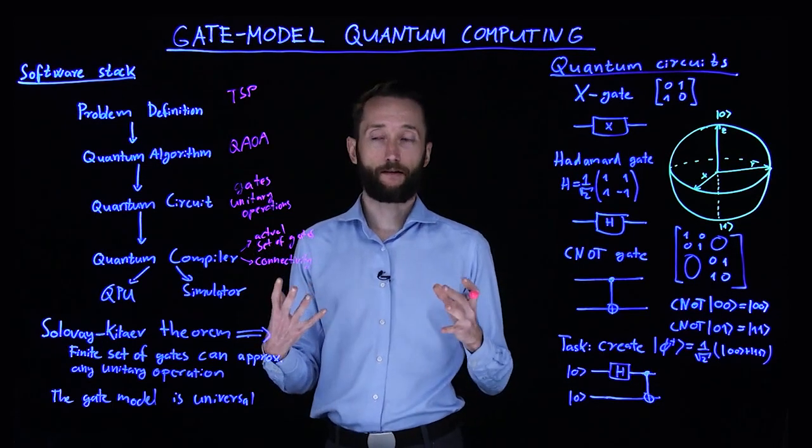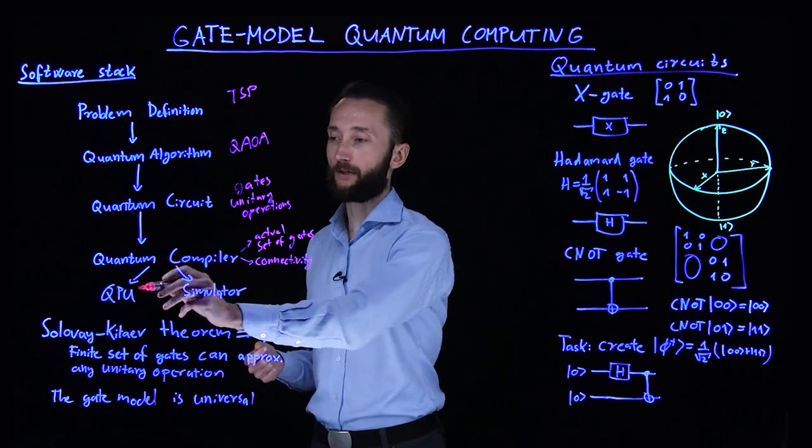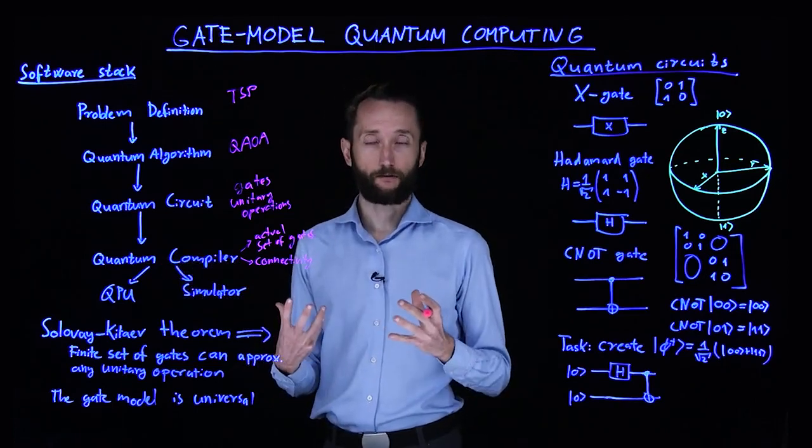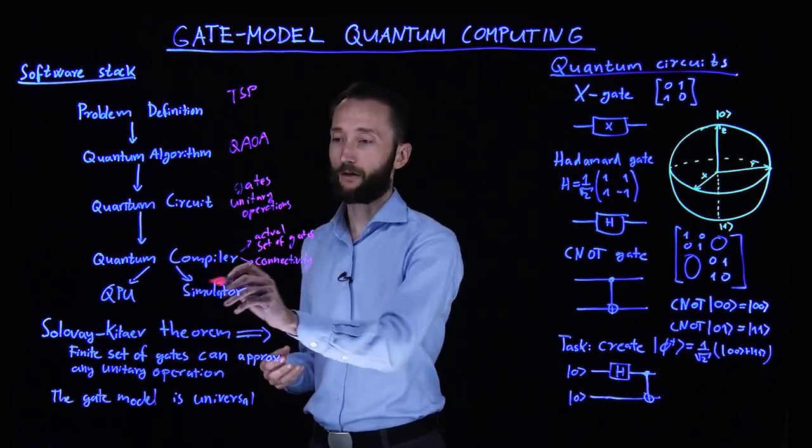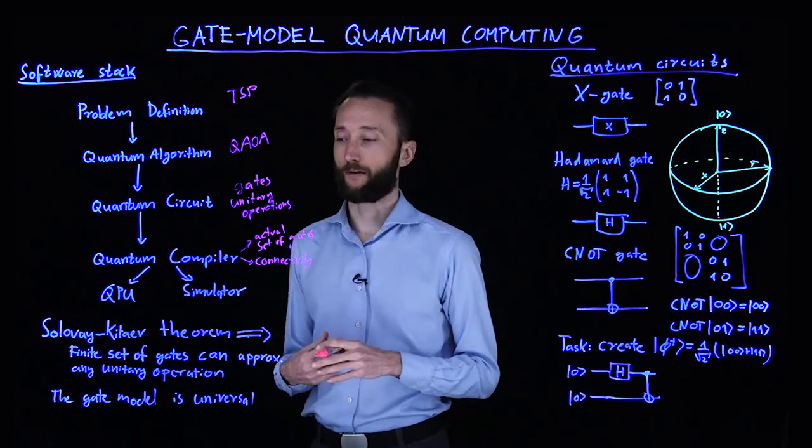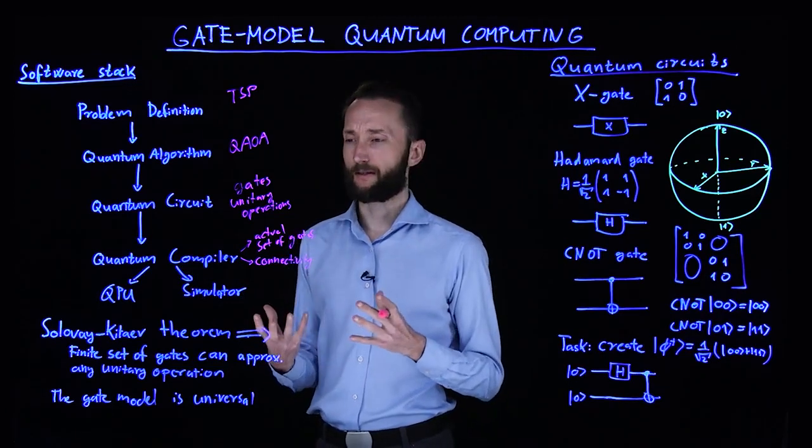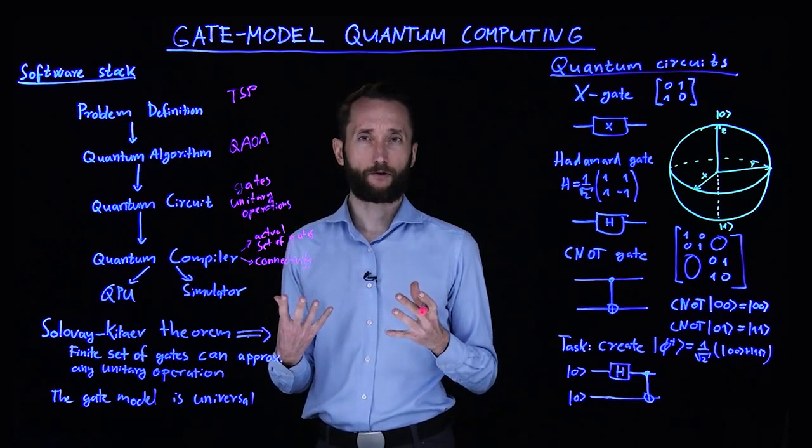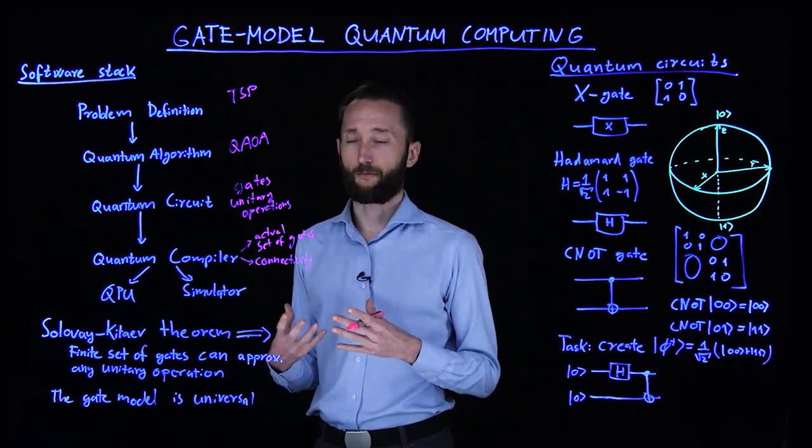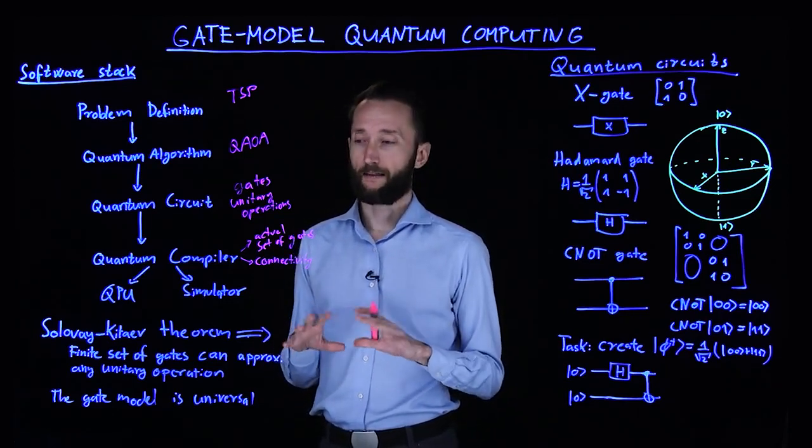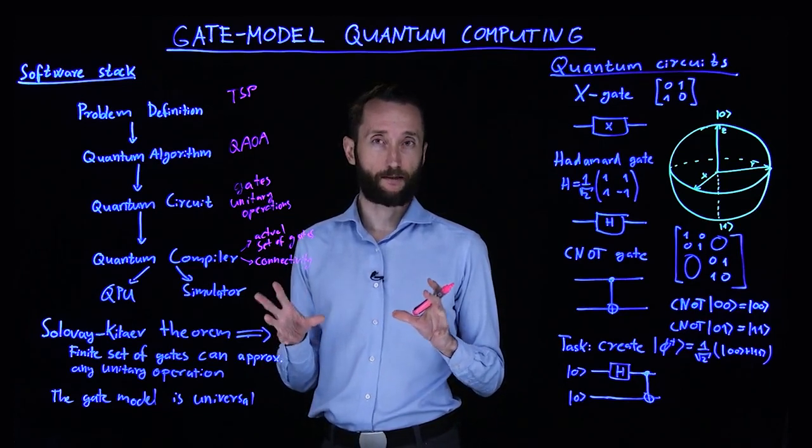And once this compilation is done, then you can either execute your program on the quantum hardware, on the quantum processing unit, or on some simulator of the quantum system. While on a laptop you can simulate maybe 20, 22 qubits, on a supercomputer maybe 50, and that's pretty much when we run out of classical resources.